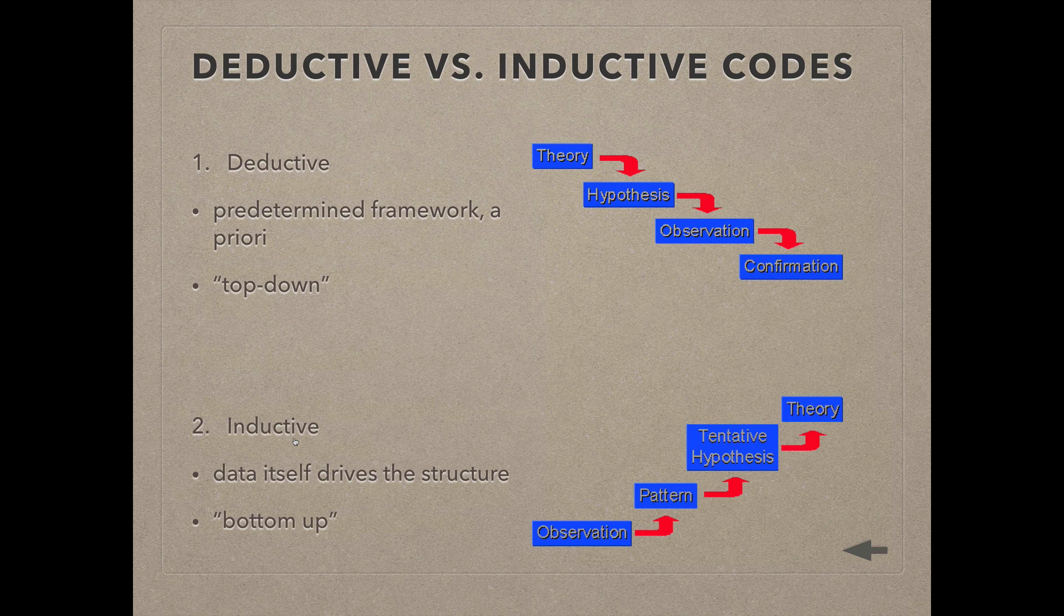Some of the benefits of this approach is that it is relatively easy to apply because codes are determined in advance and the coding process only utilizes these predetermined codes. A downfall, though, is that key information might be missed.